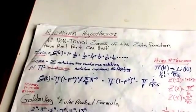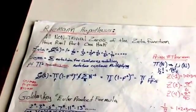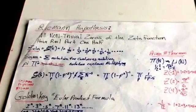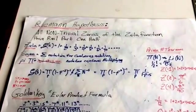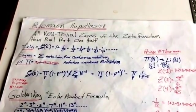Hello, in this video I hope to make my proof for the Riemann hypothesis as simple as I can for anyone to understand that all non-trivial zeros of the zeta function have real part one-half.